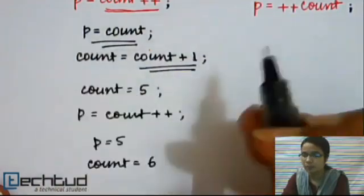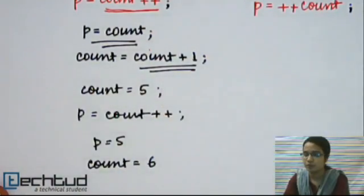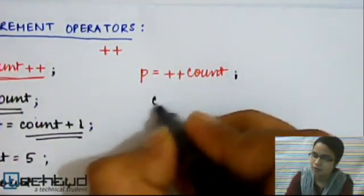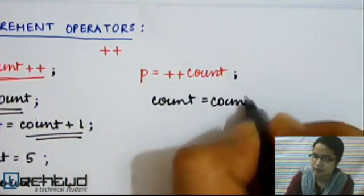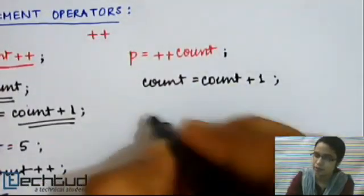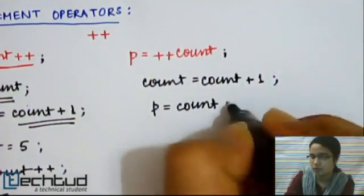For PRE-increment operator, you can guess: first, the value of the variable is incremented by one, and then the modified value will be assigned to the variable P.